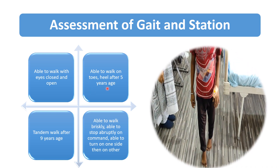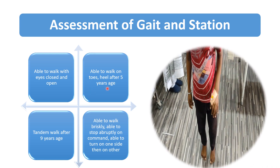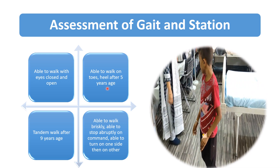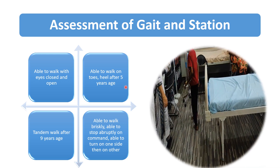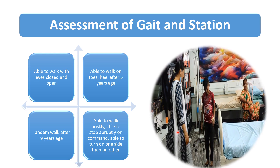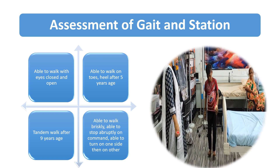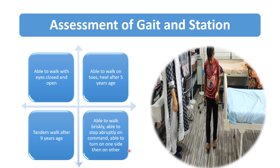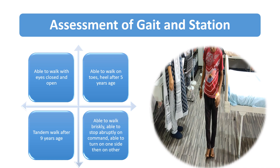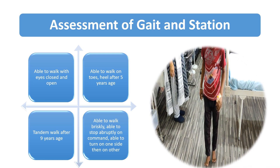Then we tell the child to perform the toe and heel walk, which is possible after the age of 5 years. The child performs the toe walk, then the heel walk. We also tell the child to walk briskly, then suddenly tell the child to stop and turn to the right side, left side, and backward. By this way, we observe the gait and station of the child.